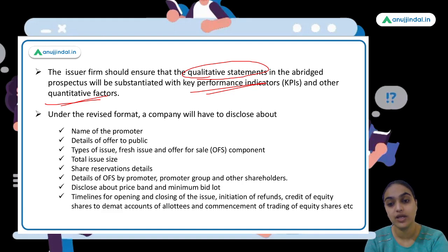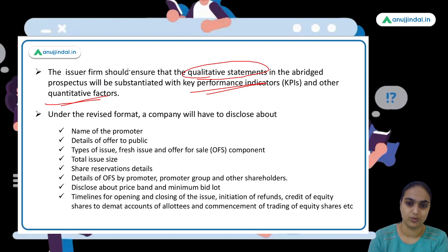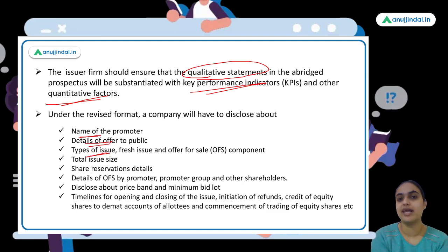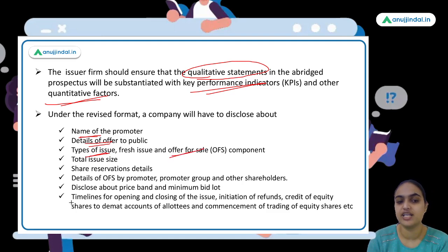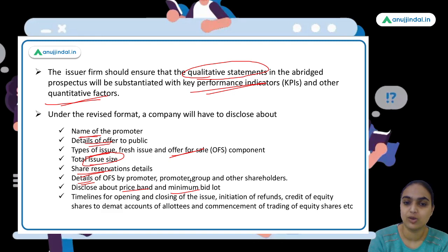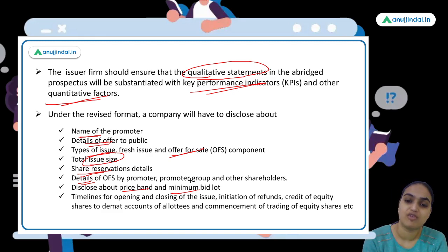As per the revised format, various things must be disclosed in the abridged prospectus. These include the name of the promoter, details of the offer being made to the public, offer-for-sale related details from existing shareholders, total issue size, share reservation details, price band, minimum lot size, and timelines — when the issue opens and closes, when securities will be allotted, and when trading can begin.